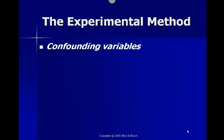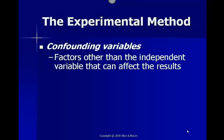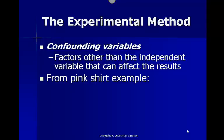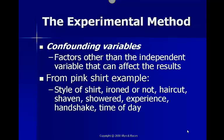Some things that we need to look out for when using the experimental method. First are confounding variables — these are factors other than the independent variable that can have an effect on our results. Looking at the pink shirt example, some confounding variables could be the style of the shirt, whether it's been ironed or not, whether the person has had a haircut, have they shaved, are they showered, what type of experience do they have, do they have a good handshake, what time of day it is, whether they're male or female — we could go on and on. The hard part about setting up an experiment is trying to control as many of these as possible.